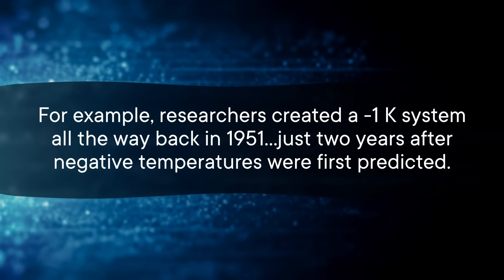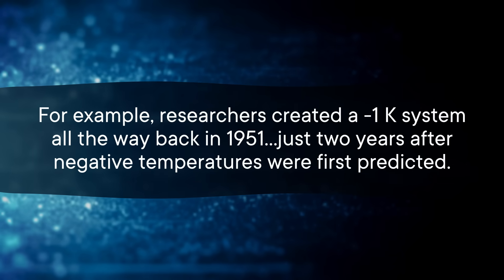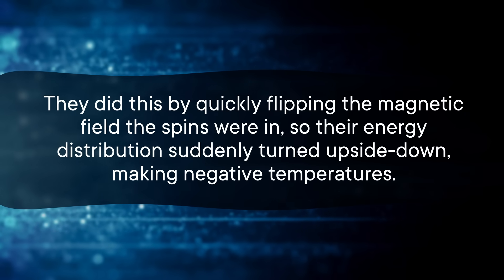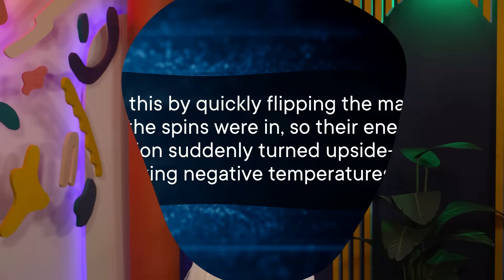But there's other technology out there that scientists can use to make stable negative temperatures. For example, researchers created a negative 1 Kelvin system all the way back in 1951, just two years after negative temperatures were first predicted. They did this by quickly flipping the magnetic field the spins were in, so their energy distribution suddenly turned upside down, making negative temperatures.